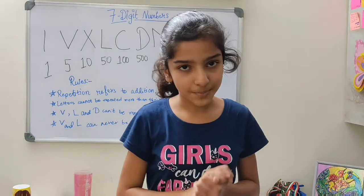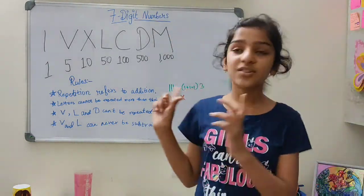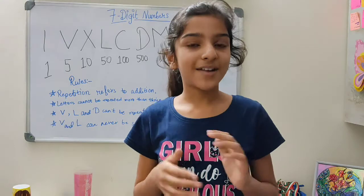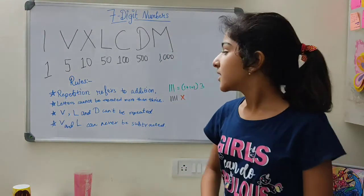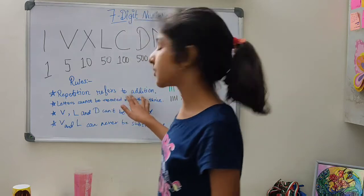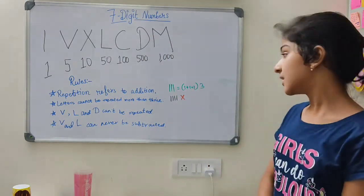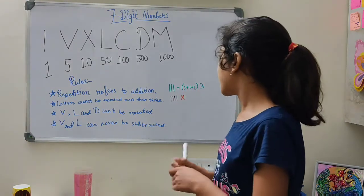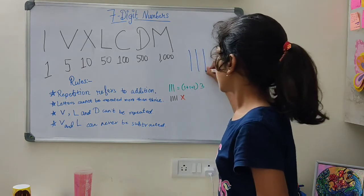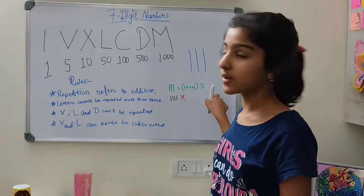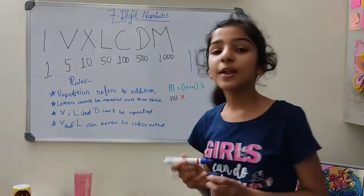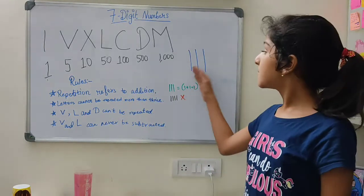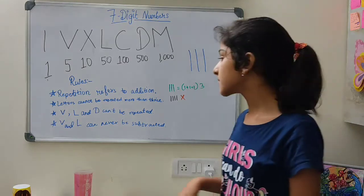There are a few rules in writing Roman numerals. Rule 1: repetition refers to addition. For example, if I write I three times — III — that is 1 + 1 + 1 = 3. Rule 2: letters cannot be repeated more than three times. So writing IIII for 4 is wrong.